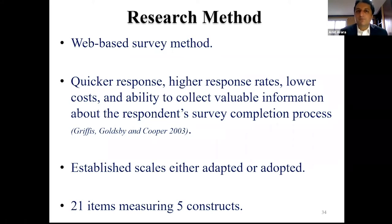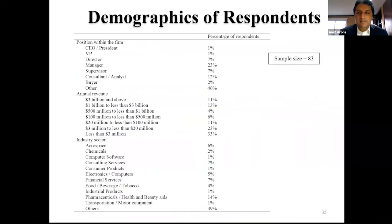To empirically test this, we designed a web-based survey with 21 items measuring five constructs, all scales adapted or adopted from existing literature. The sample included firms of various sizes — about a quarter had revenue over a billion dollars, and a third had less than $3 million — across industries including aerospace, chemical, and computer software, with a total sample size of 83. Although small, we confirmed the statistical power was sufficient. For the analytical procedure, we used SmartPLS 3.0, a partial least squares approach preferable for small samples that tends to underestimate rather than overestimate path coefficients, reducing the likelihood of Type I errors.